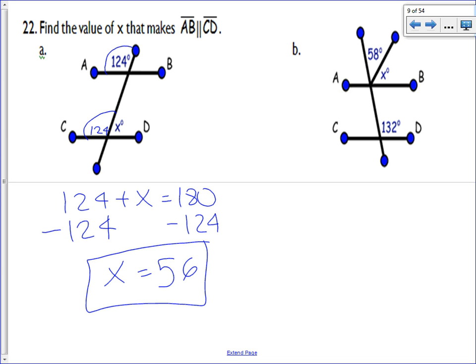Okay, 22b. So the lines, again, assume that the lines are parallel. If they're parallel, what's true? Well, it's true that this angle will be congruent to these two because of corresponding angles. So I can add 58 plus x and set that equal to 132 degrees.